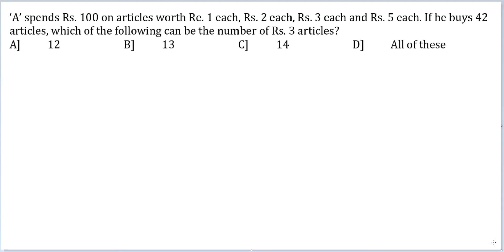Let's look at this question. A spends Rs. 100 on articles worth rupees 1 each, 2 each, 3 each and 5 each. If he buys 42 articles, which of the following can be the number of Rs. 3 articles?